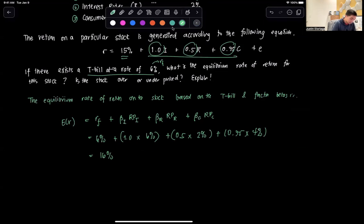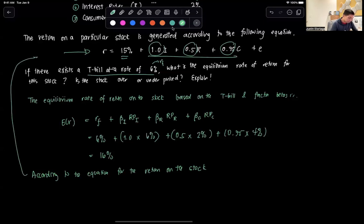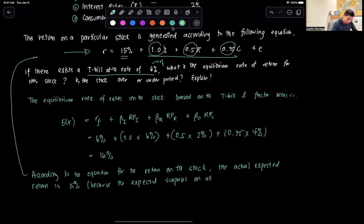Now let's answer the second question: is the stock over or underpriced? According to the equation for the return on the stock, that's this equation by the way, the one on top. The actual expected return is 15 percent, and this is because the expected surprises, remember in APT the expected surprises on all factors are zero by construction.